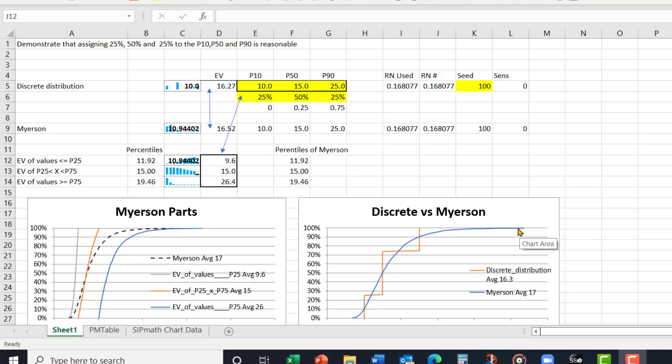Now here's what I've done. I've separated the Myerson distribution into three components: those values that are P25 and less, those values that are 25 to 75, and those values more than 75, and calculated those expected values. And they are shown here.